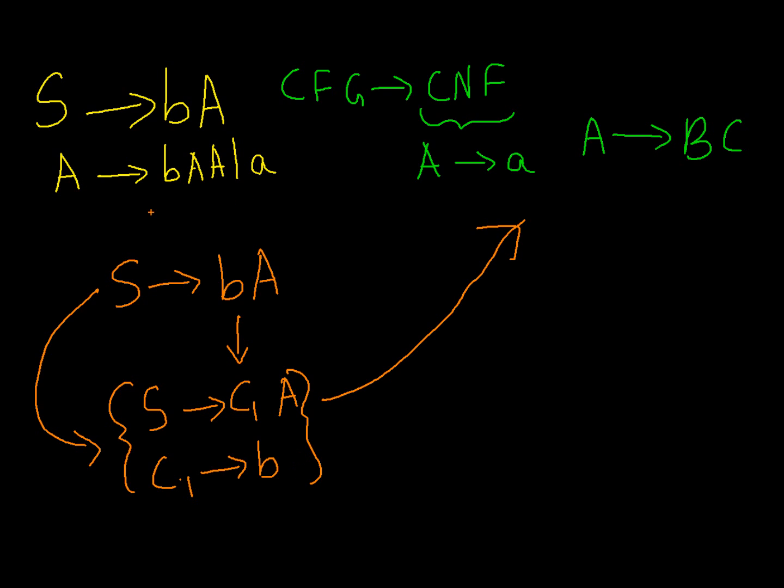Next we have symbol A produces this. I will write it over here. Symbol A produces terminal b and two symbols. I will bring down A as it is.